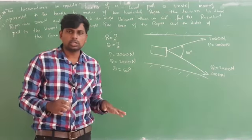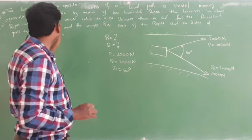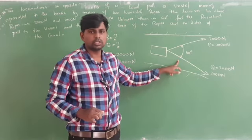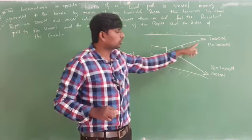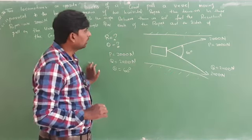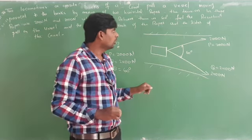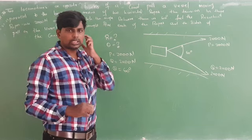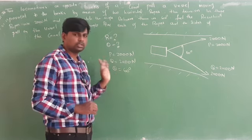Since no diagram is given in this problem, draw it yourself. One locomotive is on each bank, each connected by a horizontal rope to the vessel moving along the canal. The first rope exerts 2000 Newton, the second exerts 2400 Newton, and the angle between the two ropes is 60 degrees. You need to find R and theta.